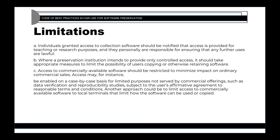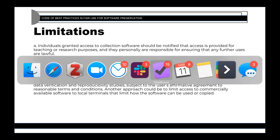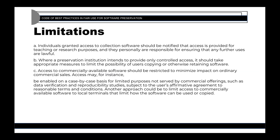The third limitation is that access to commercially available software should be restricted to minimize impact on ordinary commercial sales. For example, it might be enabled on a case-by-case basis for limited purposes not served by commercial offerings, such as data verification and reproducibility studies, subject to the user's affirmative agreement to reasonable terms. Another approach could be to limit access to commercial software to local terminals that limit how the software can be used or copied, since the fourth fair use factor is impact on the market.